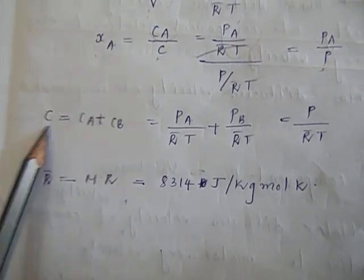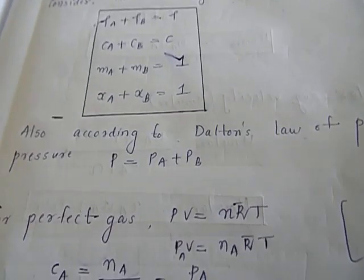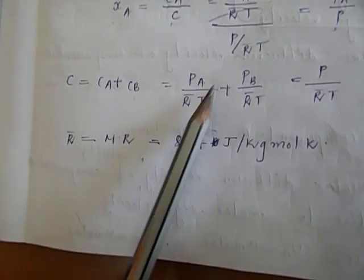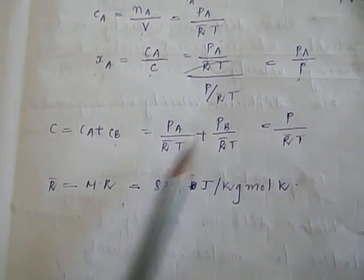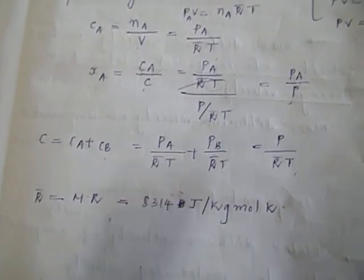We know that C is equal to C_A plus C_B. Substituting, this equals P_A by RT plus P_B by RT. According to Dalton's law, P_A plus P_B is equal to P, so C equals P by RT.